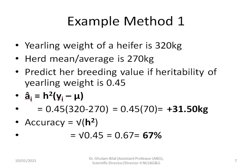A simple example for Method 1: the yearling weight of a heifer is 320 kg and the herd average is 270 kg. Predict her breeding value if heritability of yearling weight is 0.4. â_i = h² × (y_i − µ) = 0.4 × (320 − 270) = +20... solving gives +31.5 kg. Accuracy is the square root of heritability = √0.4 = 0.67, so our prediction is 67% accurate.